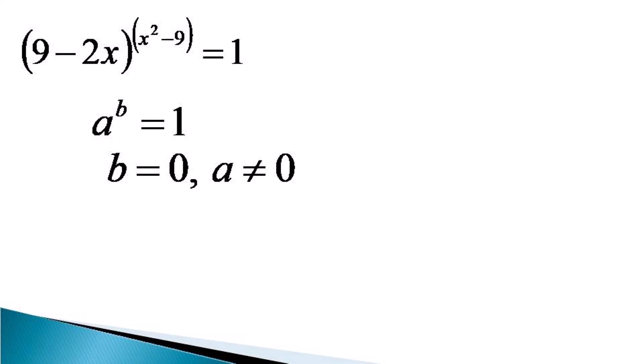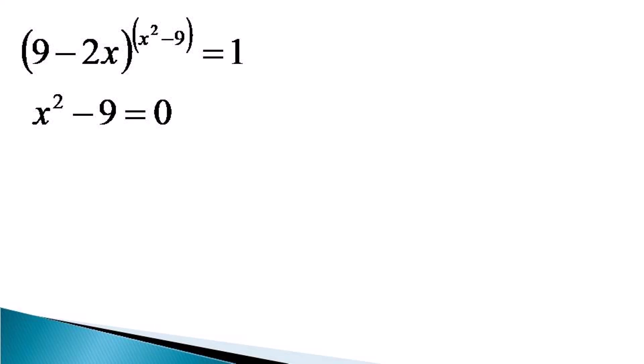Let us apply this condition. The exponent x squared minus 9 must equal 0, which gives x squared equals 9. Taking the square root of both sides gives x equals plus or minus 3.